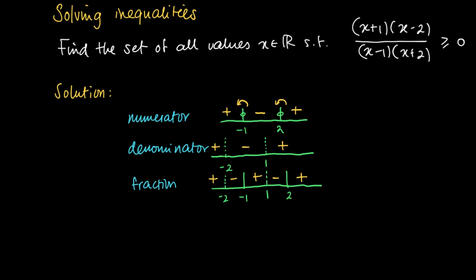We are interested in when the fraction on the left-hand side is greater than or equal to 0. We can simply read this from the last line of the sign scheme. Looking at all positive values: to the left of -2 we have positive values, though -2 is excluded as a solution. We also see a positive region and a zero at -1 in the interval (-2, 1), so -1 is included. The value 1 is excluded. Finally, 2 is included, and to the right of 2 we are in the positive area.